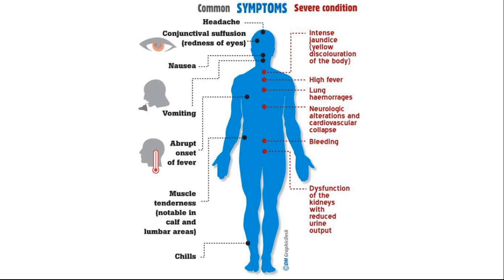The common symptoms include headache, nausea, vomiting, fever, muscle fatigue, and chills. The severe conditions of rat bite fever include intense jaundice or yellow discoloration of the body, high fever, lung hemorrhage, neurologic alterations, and cardiovascular collapse.